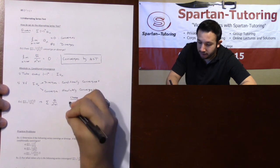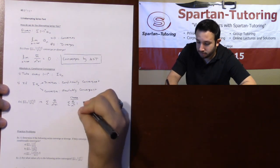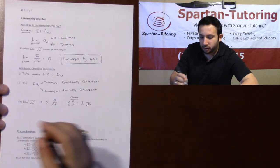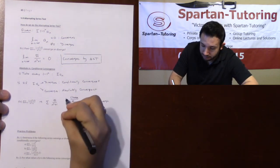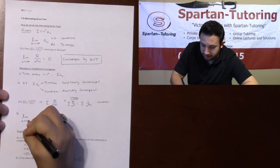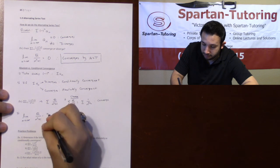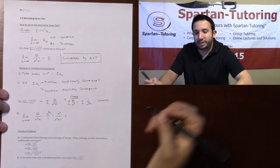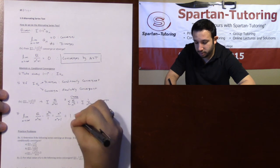Choose b_n by taking the highest power on top — square root of n — divided by the highest power on bottom — n squared — which simplifies to one over n to the three halves. This converges by p-series. Step two: take the limit as n goes to infinity of a_n over b_n — that's square root of n over n squared plus one, times n to the three halves over one — which gives n squared over n squared plus one. The limit is one, which does not equal zero or infinity.